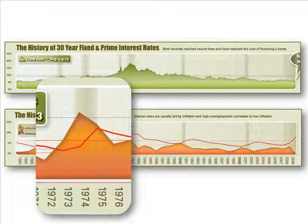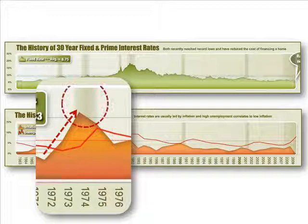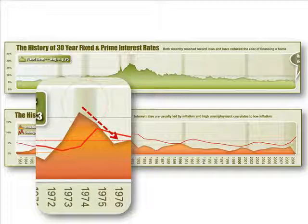Taking a closer look at one of the peaks, we see that rising inflation often leads to recession. These are indicated by the dark vertical columns. During these economic contractions, the demand for goods, services, and employees will fall.